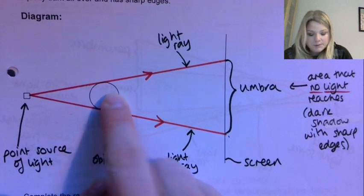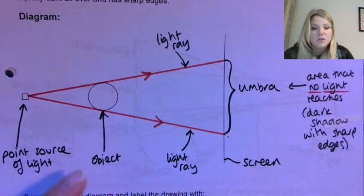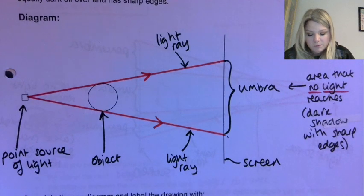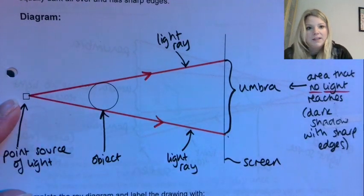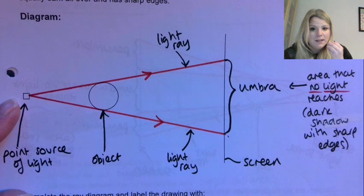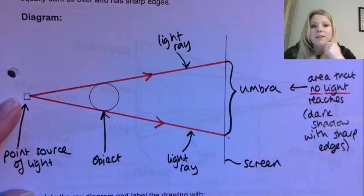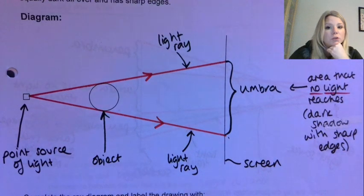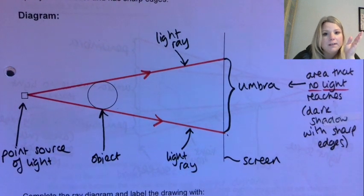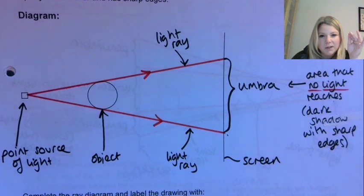So we have our object here and then we have a screen. So a screen is just any surface that a shadow can form on. A point source of light just means it's like a concentrated light source. Now, as same as with that wee guy with the book, we don't draw every single light ray in this situation, otherwise there'd be light rays drawn all over our page. We only draw really the important ones.